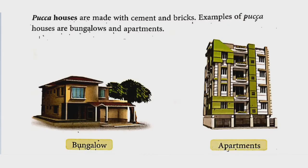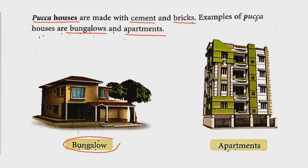Now let's see the second type: pakka houses. Pakka houses kis se banate hain? Pakka houses are made with cement and bricks. Cement aur eeton se jo houses banate hain unko bolte hain pakka houses. Examples of pakka houses are bungalows and apartments. A bungalow is a ground-floor house with one or two floors and a possible lawn — cement aur bricks se bana hota hai. An apartment is a tall building with many floors where many people share the same space — isko flat system bhi bolte hain. Yeh bhi pakka house ka example hai.